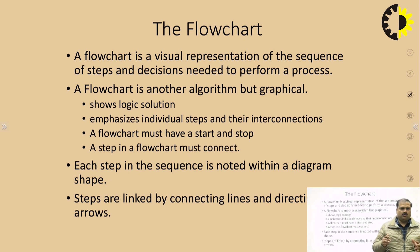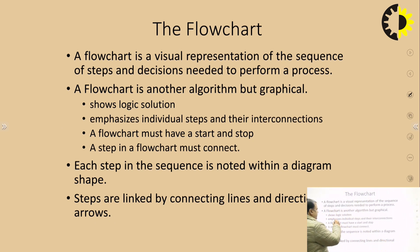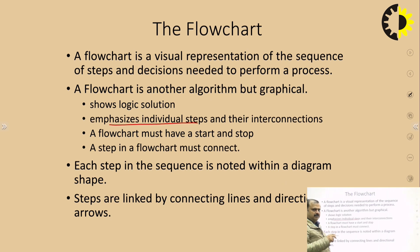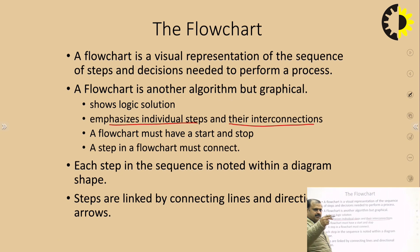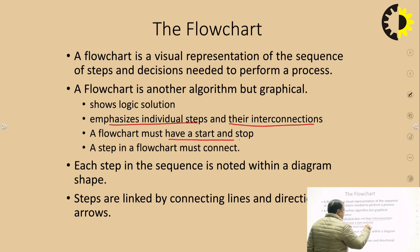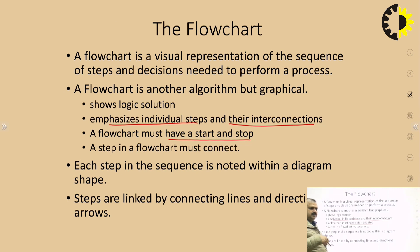These symbols represent a particular component of the process. The flowchart shows a logical solution and emphasizes individual steps. Each step is created by a separate symbol, and they are interconnected with arrows. The flowchart must always have a start and a stop point — there should not be a condition where the flowchart loops endlessly.